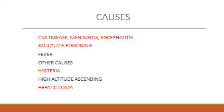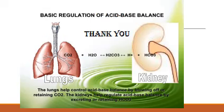Causes of respiratory alkalosis include central nervous system diseases such as meningitis and encephalitis, salicylate poisoning, fever, hysteria, high-altitude climbing, or hepatic coma. This completes the chapter on acid-base balance including the disorders.